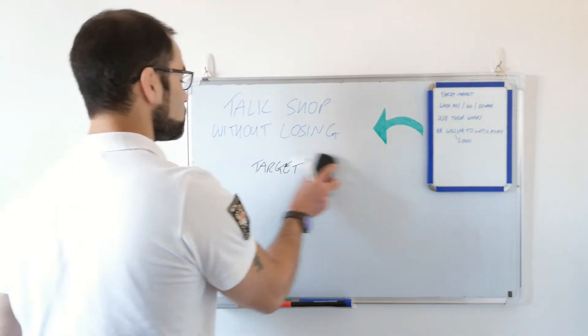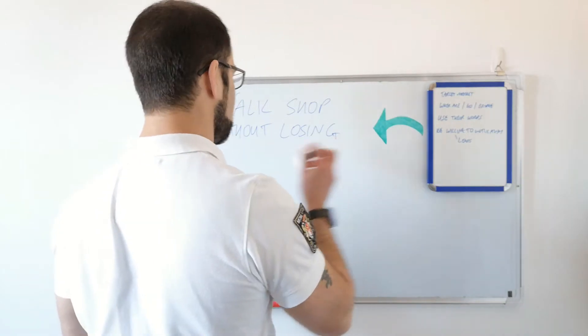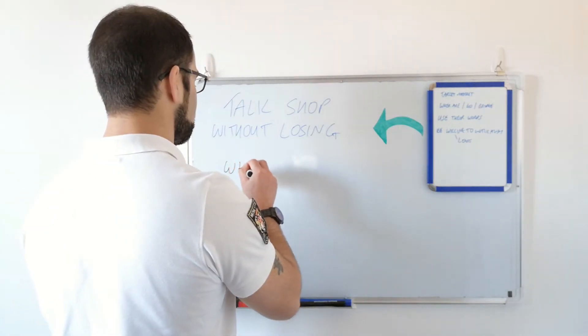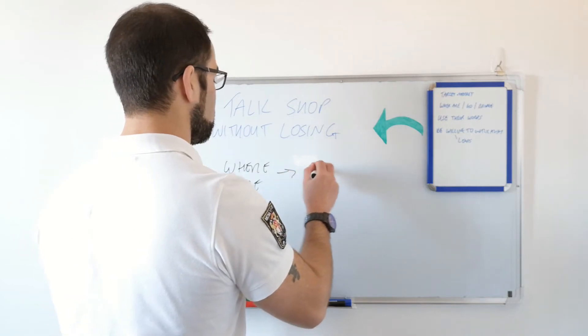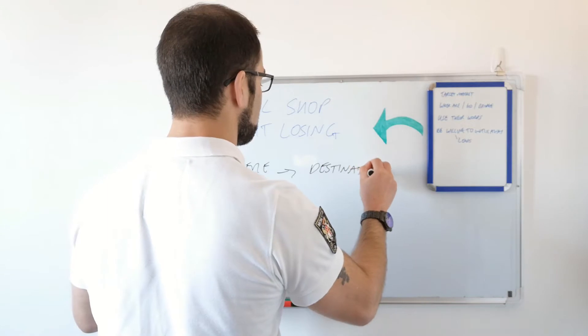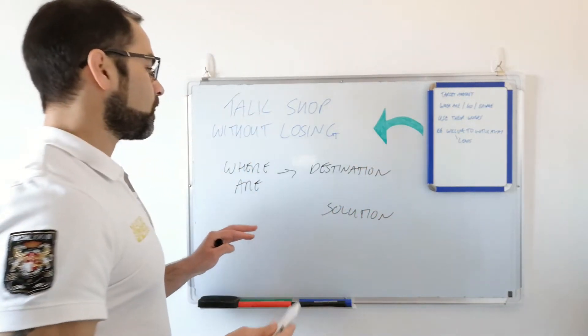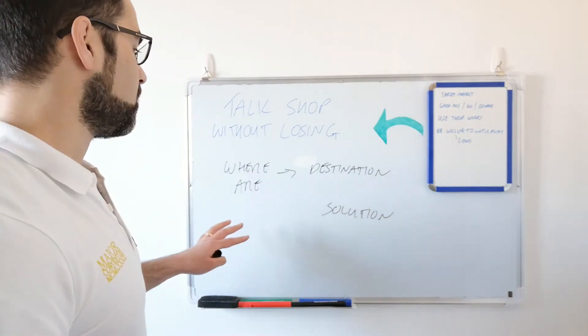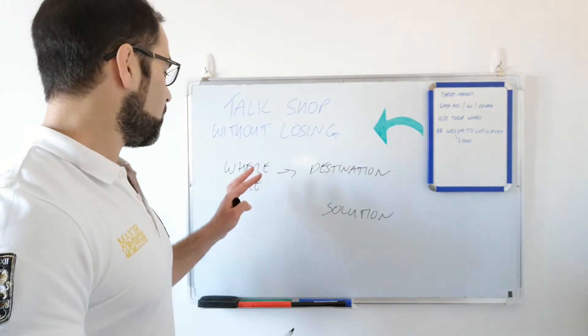Now, second thing we can do is we can also look at what is it, where someone is, where they are, their destination, and their solution. Write these down. So this is the basis of what we do, really, in network marketing, in any business, to be honest.